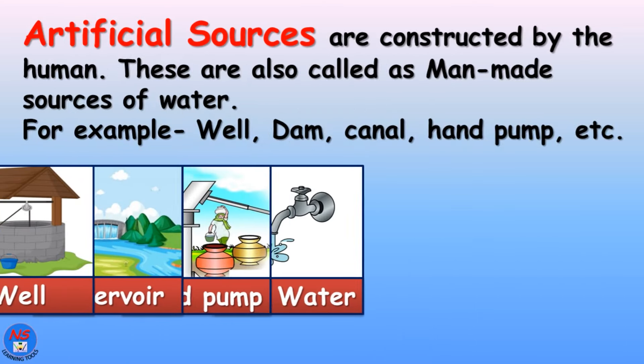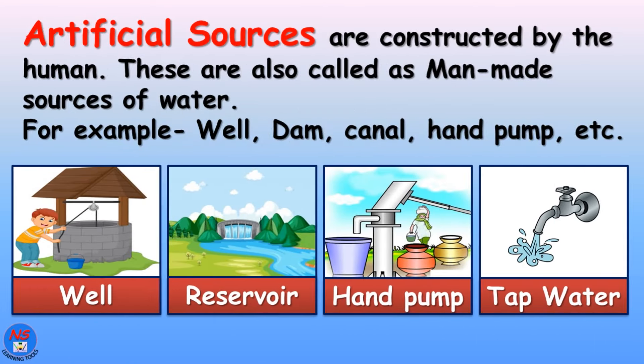Artificial sources are constructed by humans. These are also called man-made sources of water. For example, well, dam, canal, hand pump, etc.